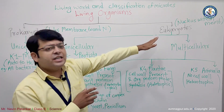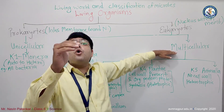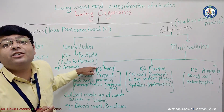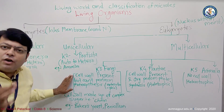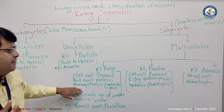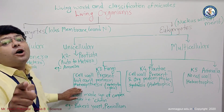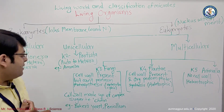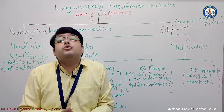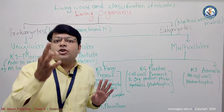Kingdom Three is Fungi — eukaryotic and multicellular organisms. Cell wall is present in fungi, but they cannot perform photosynthesis. They are heterotrophic, specifically saprophytic, meaning they depend on dead and decaying matter for food. The cell wall in fungi is made up of a tough and complex sugar called chitin. Examples include baker's yeast and Penicillium.